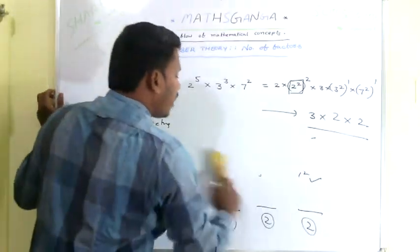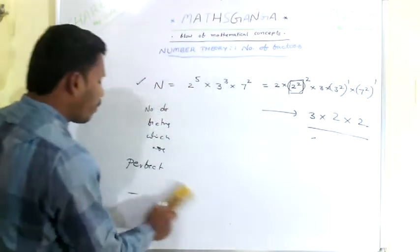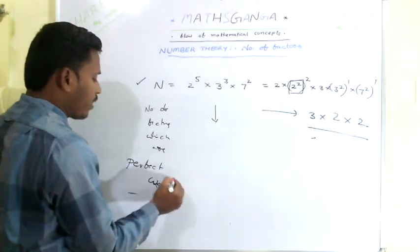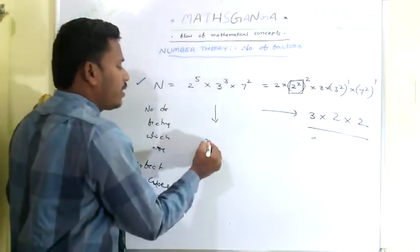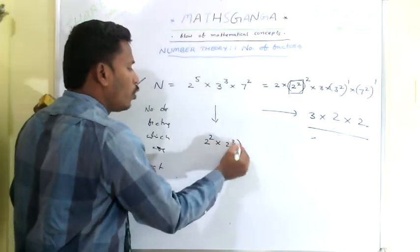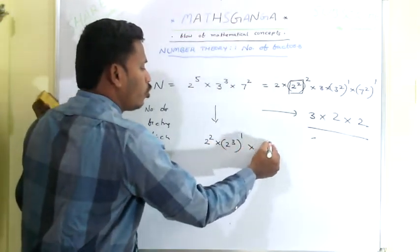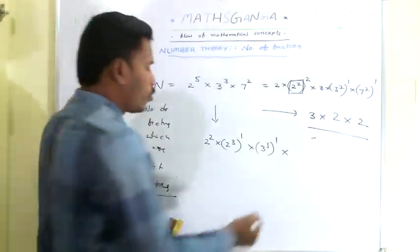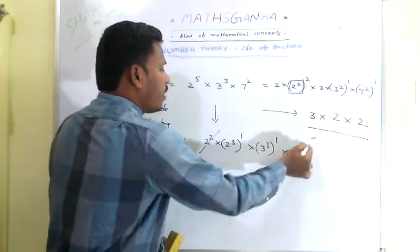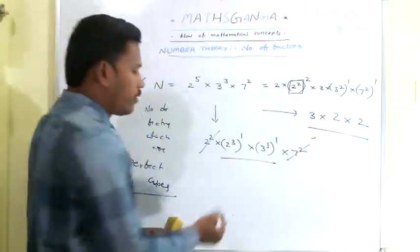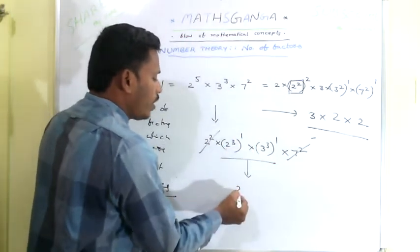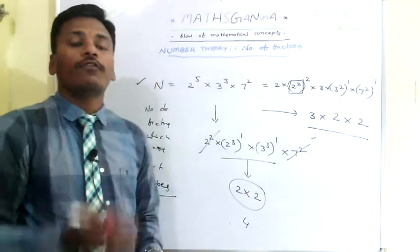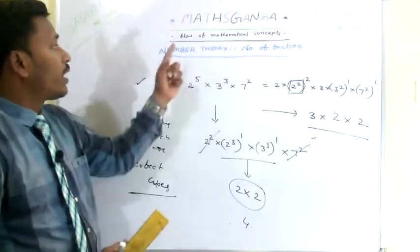If anybody asks you to count the number of factors which are perfect cubes, express n as 2^2 × (2^3)^1 × (3^3)^1 × 7^2. Separate the non-perfect-cube parts 2^2 and 7^2. Concentrate on (2^3)^1 and (3^3)^1: power 1+1=2 for each. So 2 × 2 = 4. There are totally 4 factors which are perfect cubes for the given number.